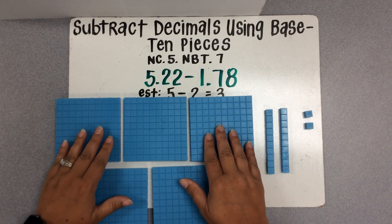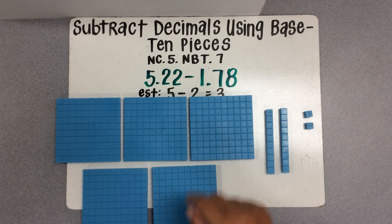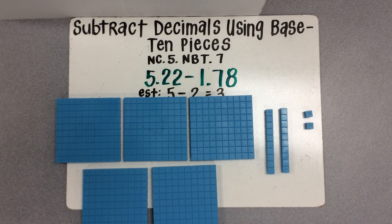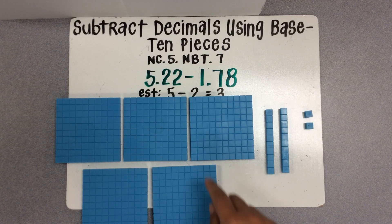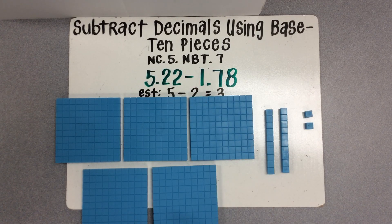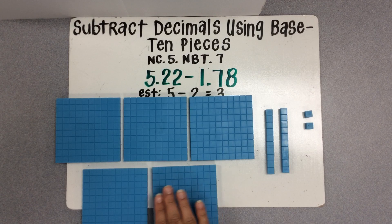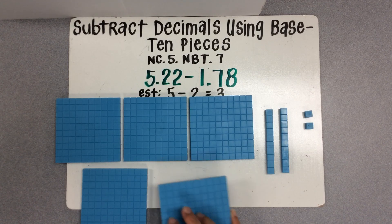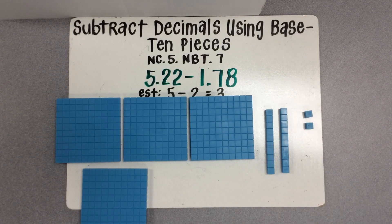Now we need to subtract 1 and 78 hundredths from this 5 and 22 hundredths. The first thing I notice is that we could easily take away 1 whole just by removing 1 of these 5. So I'm going to go ahead and subtract 1 whole.